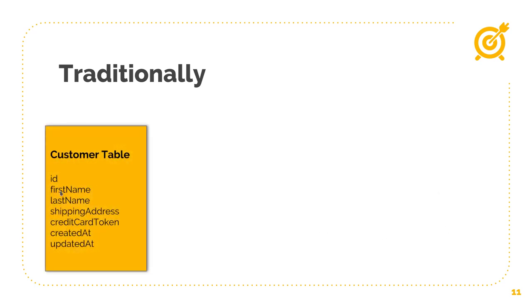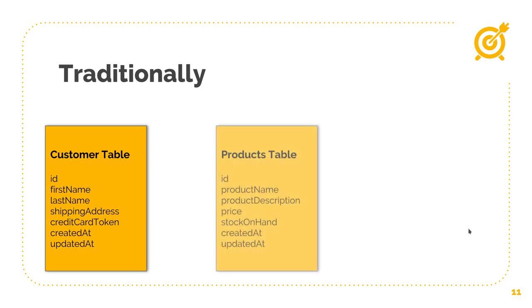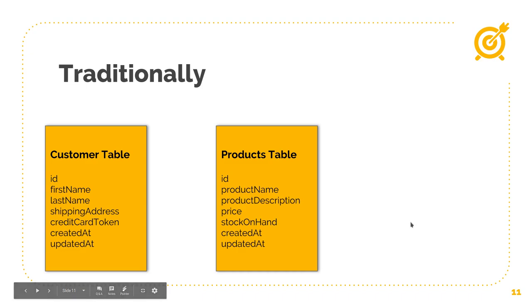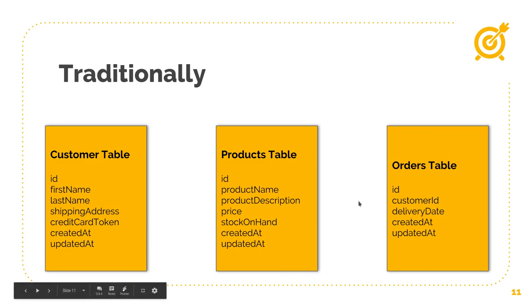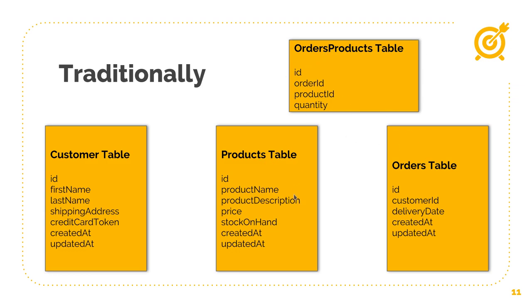Let's look at how we would have mapped this system out traditionally in a relational database. We have a customer table with some basic fields: ID, first name, last name, shipping address, and credit card token — meaning you've sent card details to a payment provider and they've given you a token you can use to redo transactions without storing actual credit card information. We have our products table which also contains basic product information. And we have our orders table, which has a customer ID that links to the ID of the customer table. Because we could have many products in a single order and a single product could be on many orders — that's a many-to-many relationship — so we would have a join table, an order products table, to map the combination of orders and products. Very normal, nothing special here.